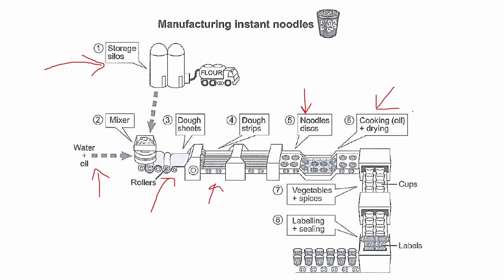And then they're cooked in oil or fried. And then they go through the drying process. Then we have the packaging stage where vegetables and spices are added to the cups. And then those cups are labeled and sealed.